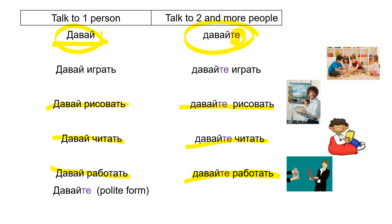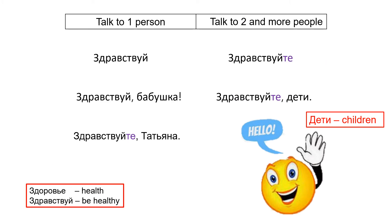But also you can say давайте when you talk to one person — it is the polite form, when you address a person as вы. For example, if you talk to a teacher or to someone who is older than you, you say давайте. And some more examples of this particle -те with the word здравствуй: здравствуй when you talk to one person, здравствуйте when you talk to two or more people. And also здравствуйте is the polite form.